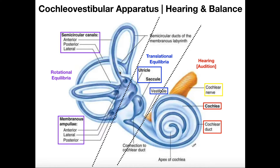Looking at these semicircular canals, we see that they have engorgements at their bases, and all three of these engorgements are in contact with the utricle. These engorgements are termed ampullae (singular: ampulla). For example, this engorgement is the ampulla of the anterior semicircular canal; the second is the ampulla of the lateral semicircular canal; and the one down here is the ampulla of the posterior semicircular canal. The ampullae are always at the base of their corresponding canal, and all three are in contact with the utricle.